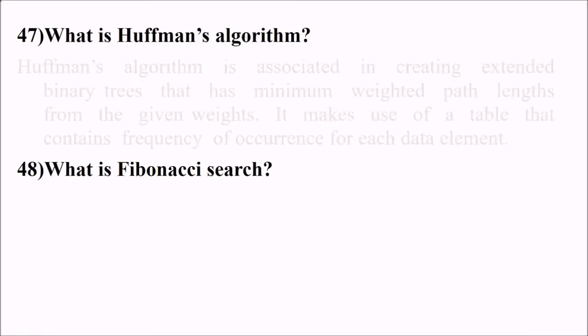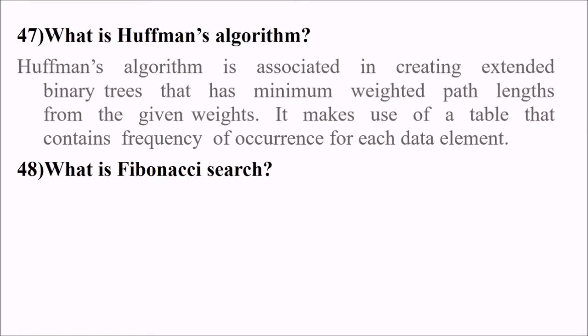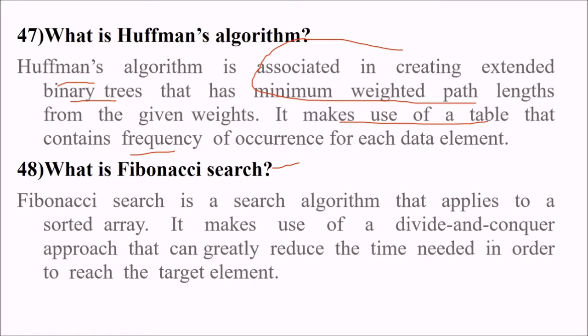What is Huffman's algorithm? Huffman's algorithm is associated with creating extended binary trees that have minimum weighted path length for the given weights. It makes use of a table that contains the frequency or number of times of occurrence of each element. What is Fibonacci search? This search is again a search algorithm that applies to a sorted array only. It also uses divide and conquer approach that can greatly reduce the time needed in order to reach the target element.